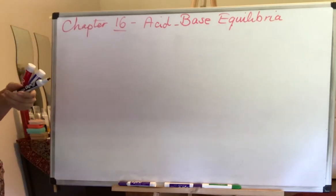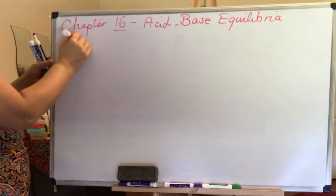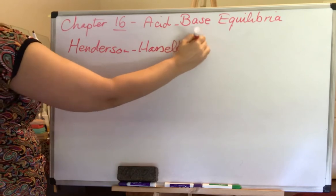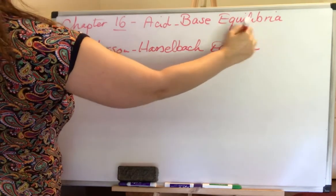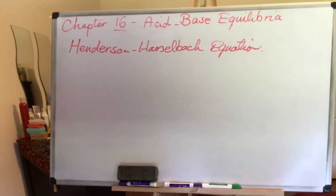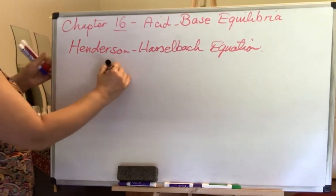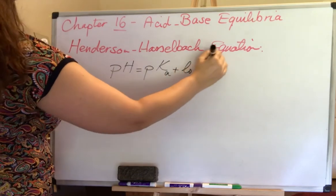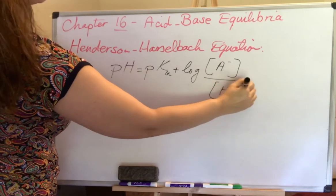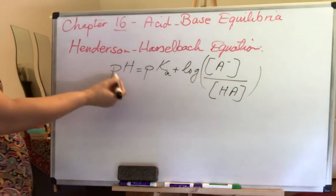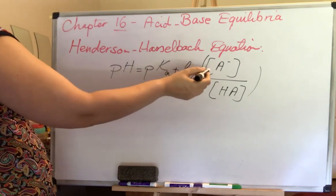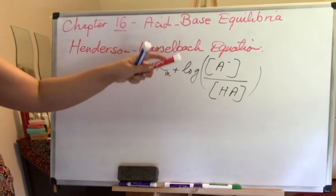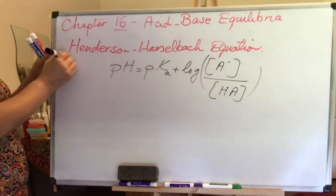When working with a specific pH, there is an important equation called the Henderson-Hasselbalch equation. The final form — which will be given during the exam — is: pH = pKa + log([A⁻] / [HA]). In other words, the pH of the buffer solution equals the pKa plus the log of the conjugate base concentration divided by the acid concentration.